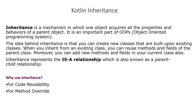Inheritance represents an IS-A relationship, also known as a parent-child relationship. For example, BMW IS-A car, Mercedes IS-A car, Ford IS-A car — that IS-A relationship between the child and parent is what defines inheritance.